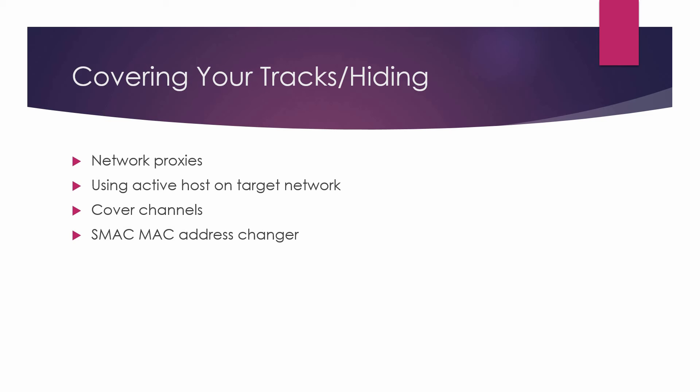Covering your tracks and hiding. An attacker can hide behind a network proxy so that people can't see their original address. They can also utilize an active host on the target network to run all of their attacks rather than running it on their own machine outside the network. In addition, they can use covert channels that are embedded in normal traffic to hide malicious intents. Lastly, they can use tools like SMAC, which is a MAC address changer, to change your MAC address to a random one in order to hide themselves.